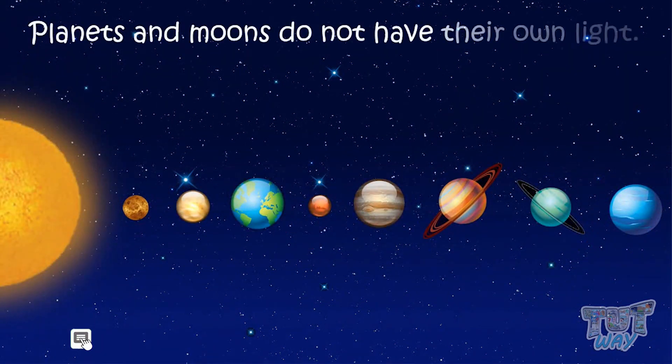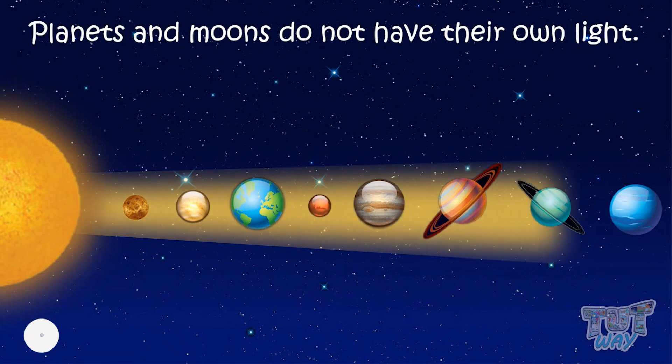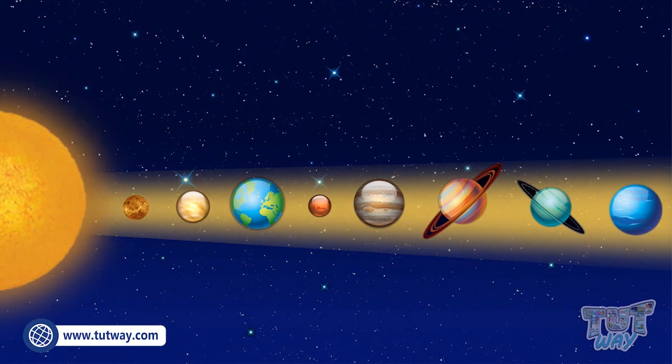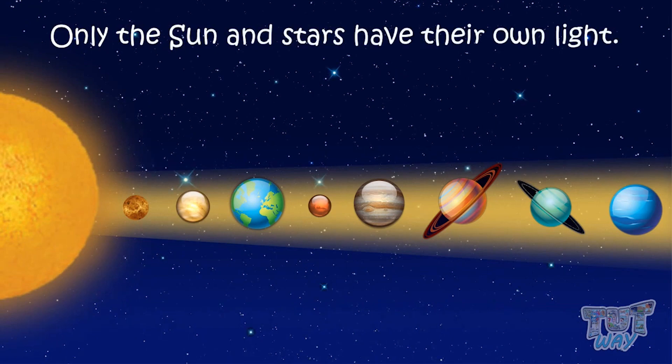Planets and moons do not have their own light. They shine when the light of the sun falls on them. Only the sun and stars have their own light.